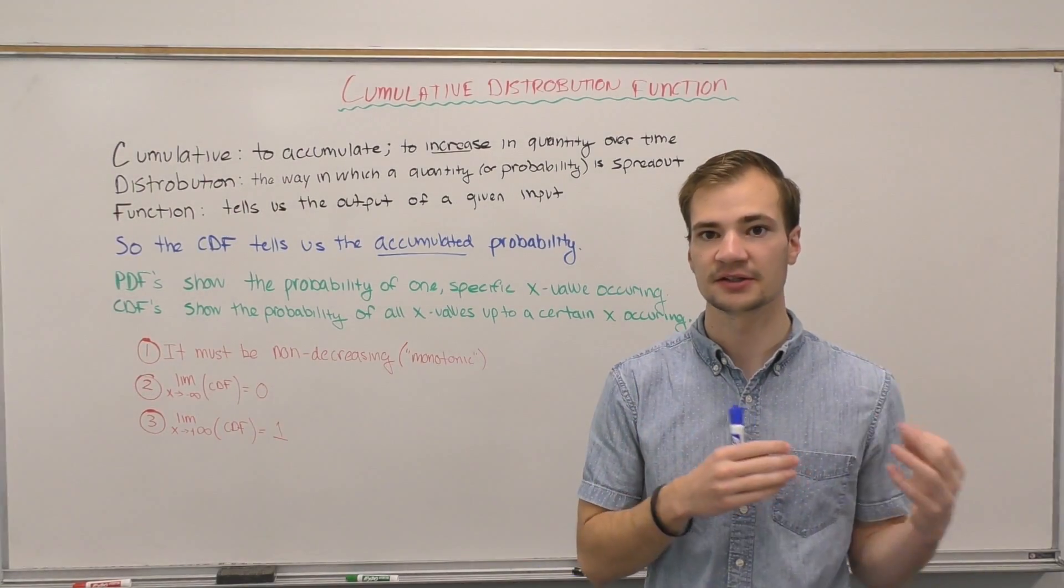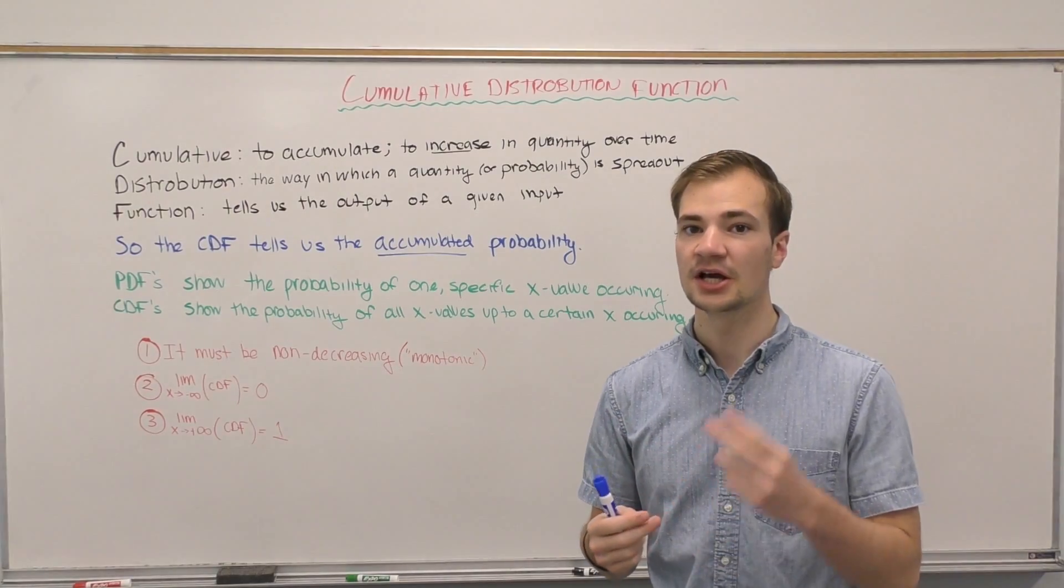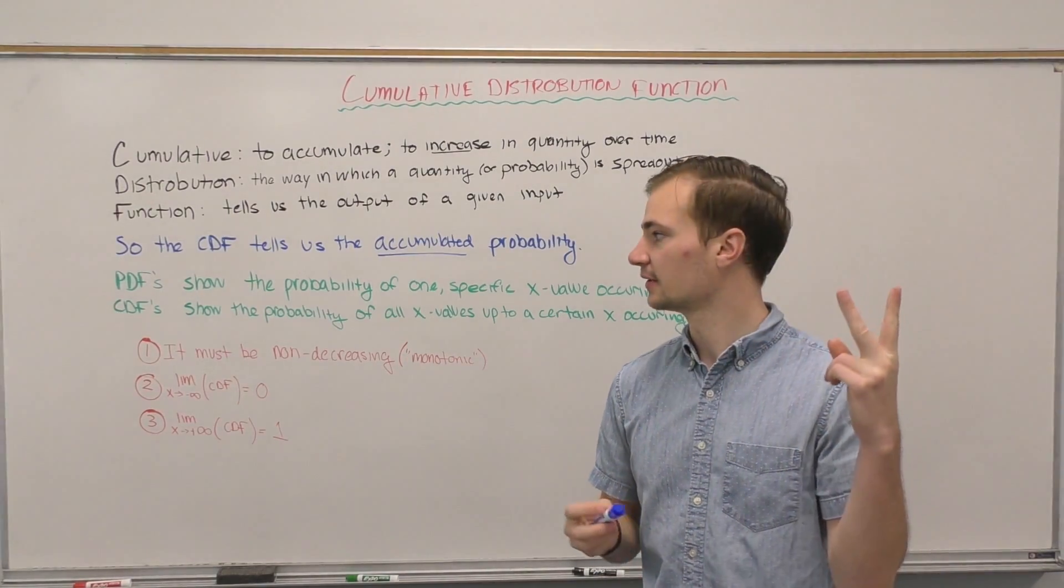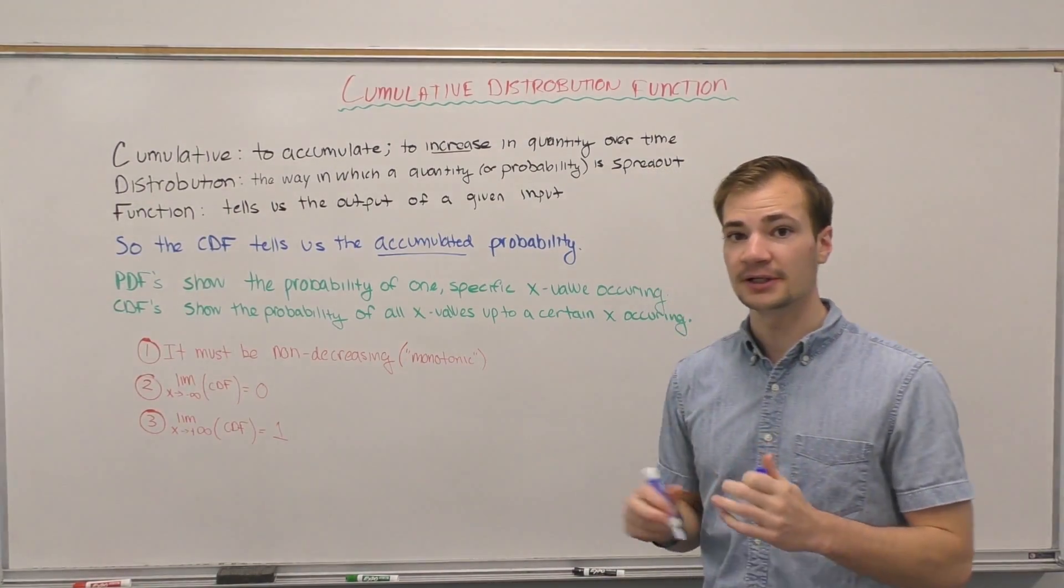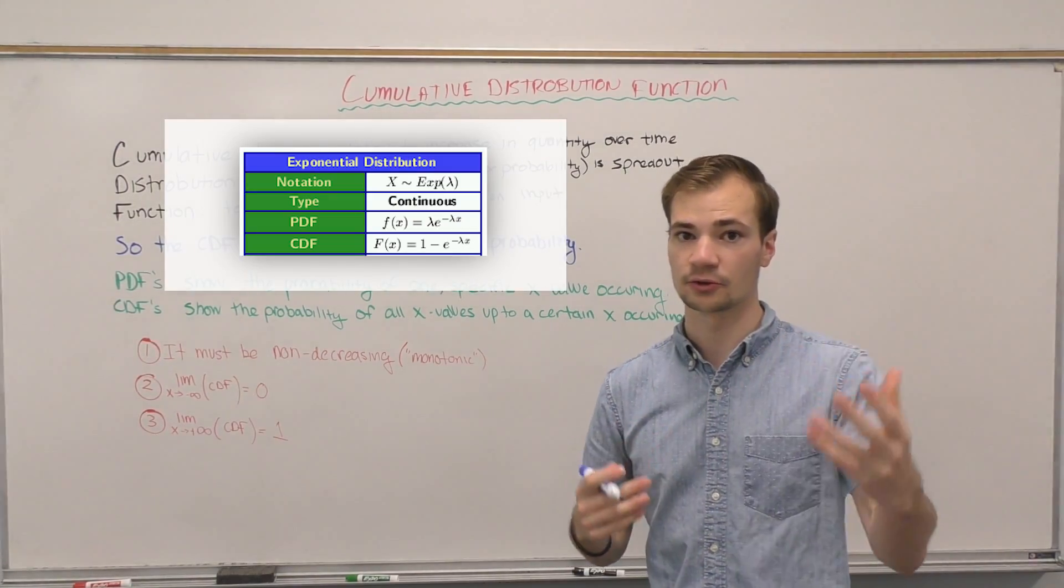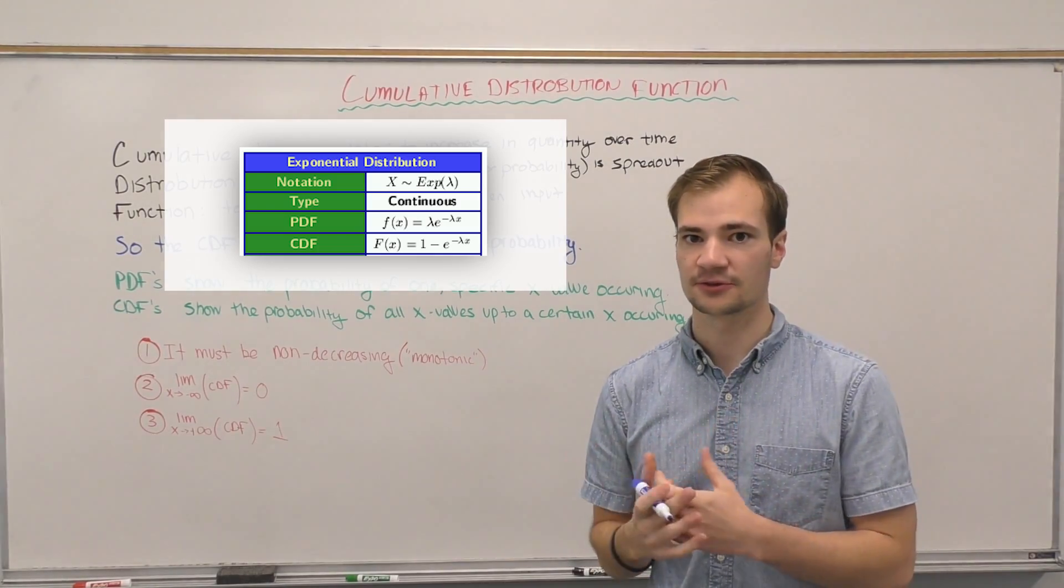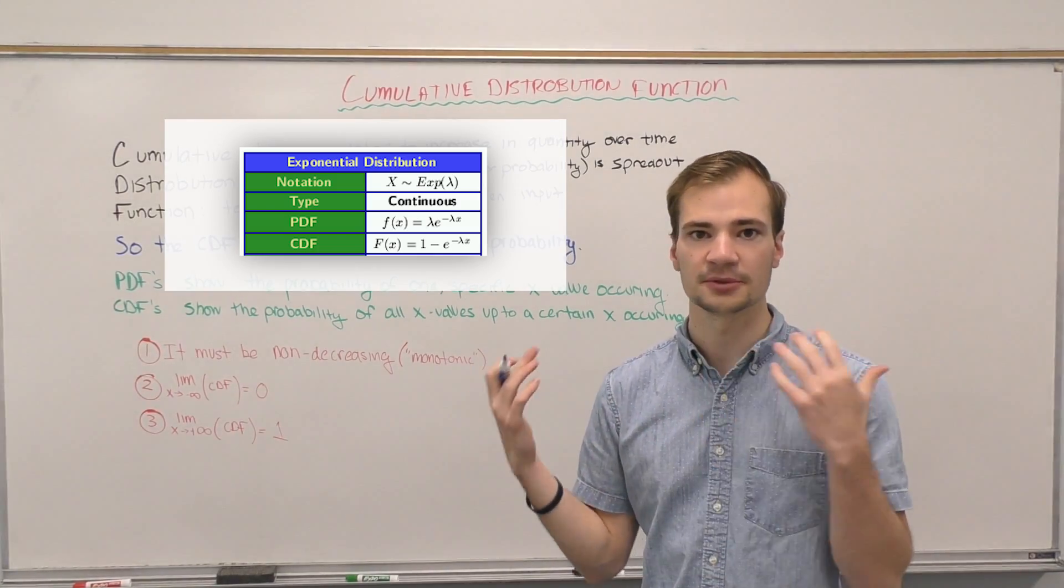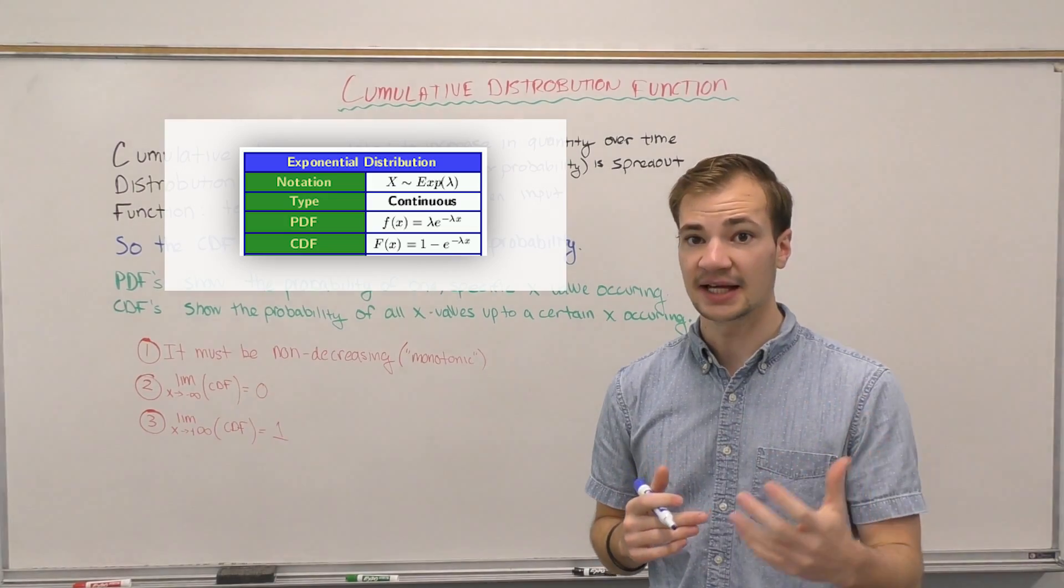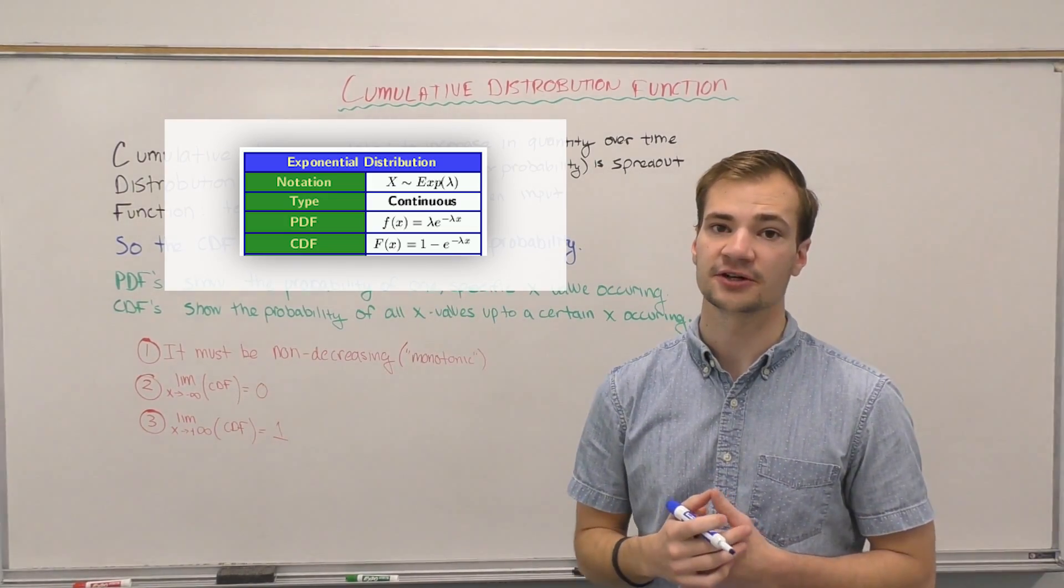Now I said that any function that meets these three rules is technically a CDF. And in my experience in taking tests and studying this academically, really there's two types that we'll be dealing with. One is actual distributions, so the normal, the exponential, and the Weibull distribution - they have CDFs of course and we can use that to find probabilities of something occurring. The second, which we'll talk about in the next video after this, is...